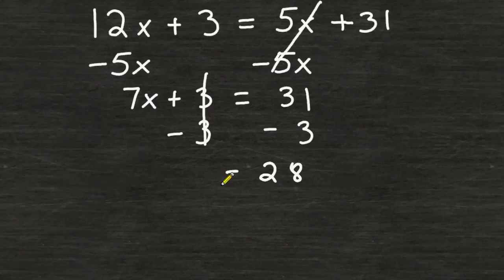And on the left hand side, we still have 7 times x remaining. Now to get rid of this 7, we have to do the opposite of multiplying by 7 which is to divide by 7. And we have to do the same thing on the other side of our equation in order to balance our equation.